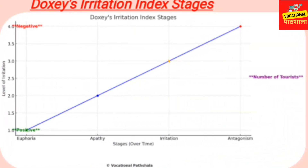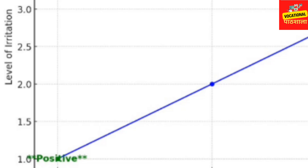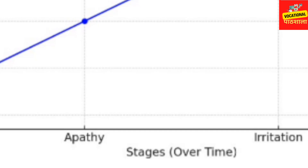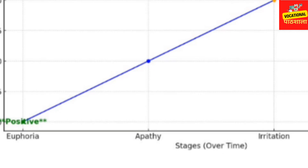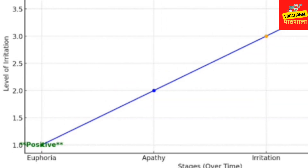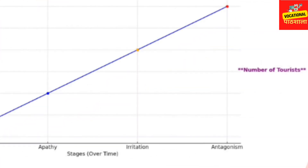As you can see on the chart, in Stage 1 — Euphoria — people are positive. The level of irritation is low, on the negative-to-positive scale. As time passes and stages progress, the level of irritation increases. In Apathy it increases slightly, then in Stage 3 it reaches around 3.0, and becomes increasingly negative.